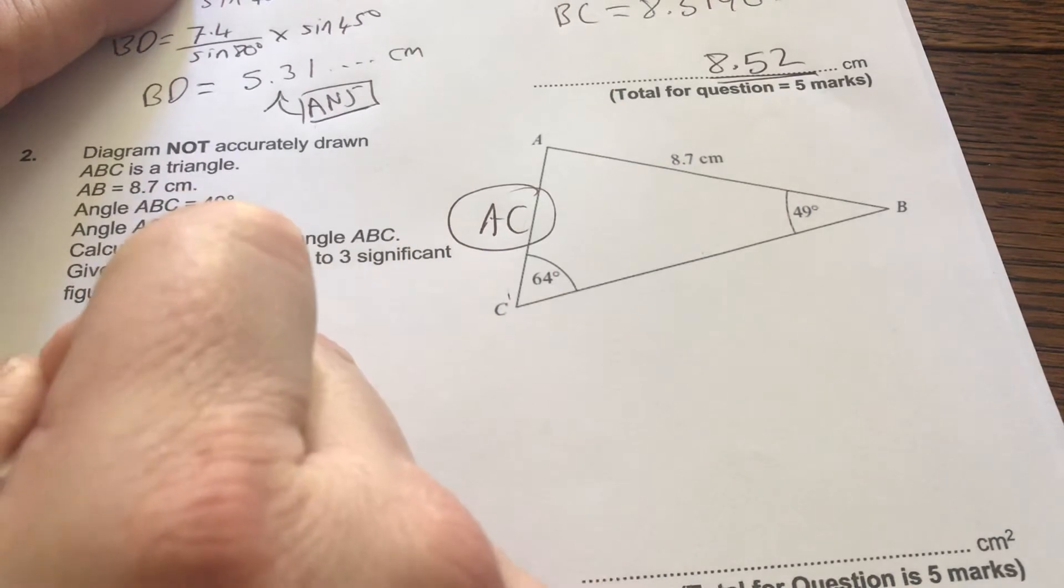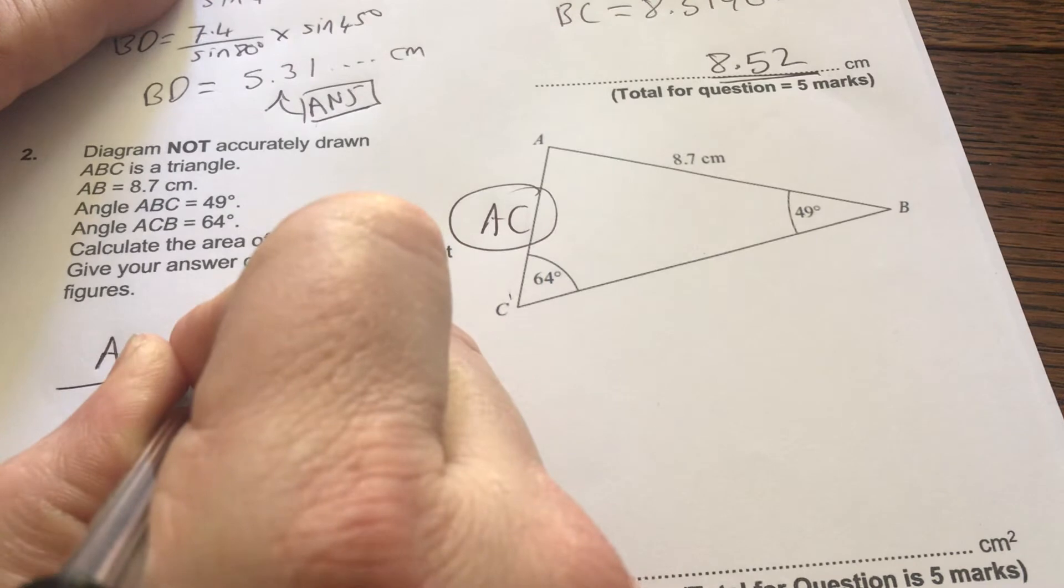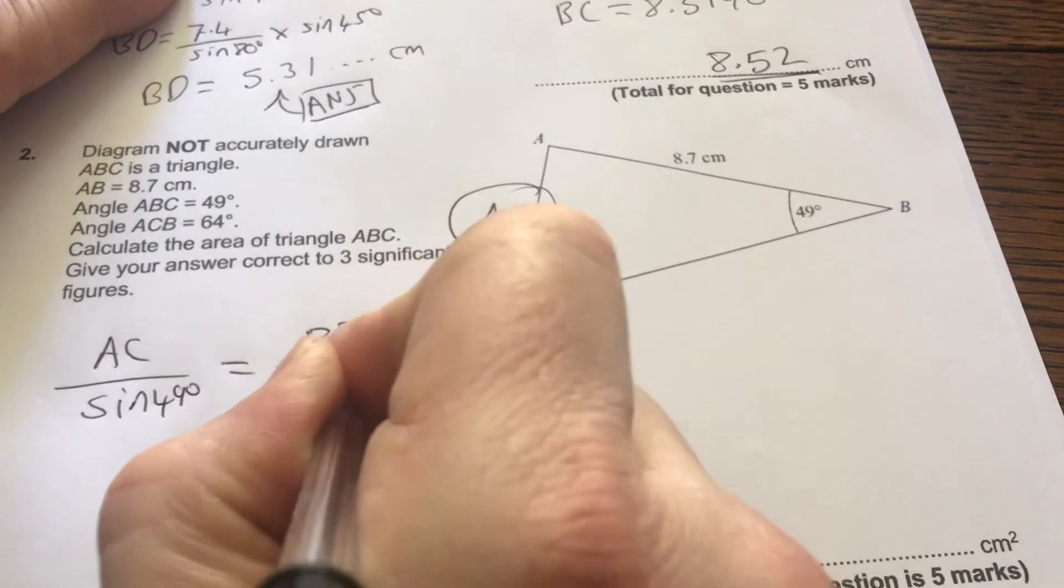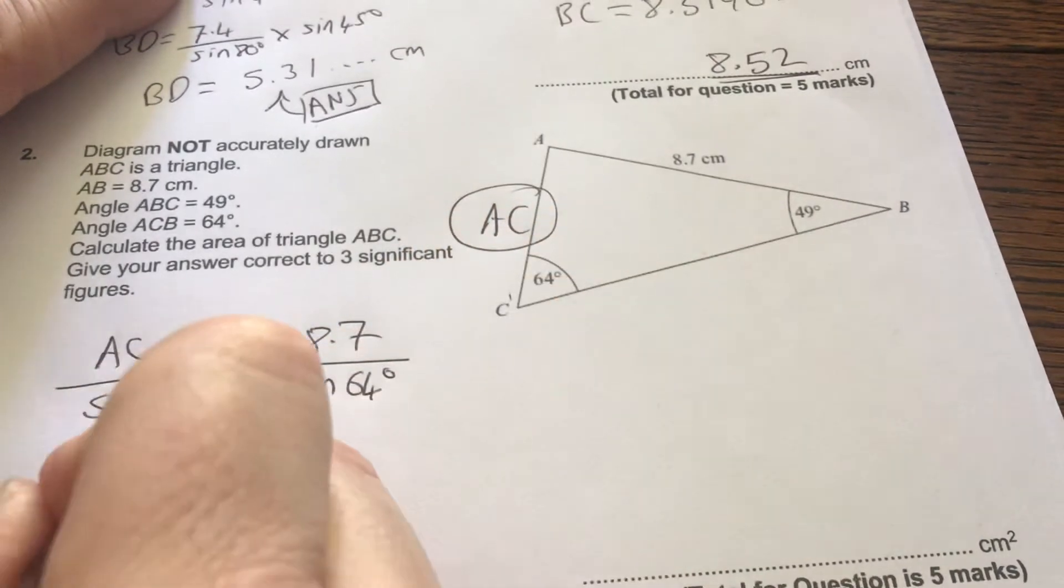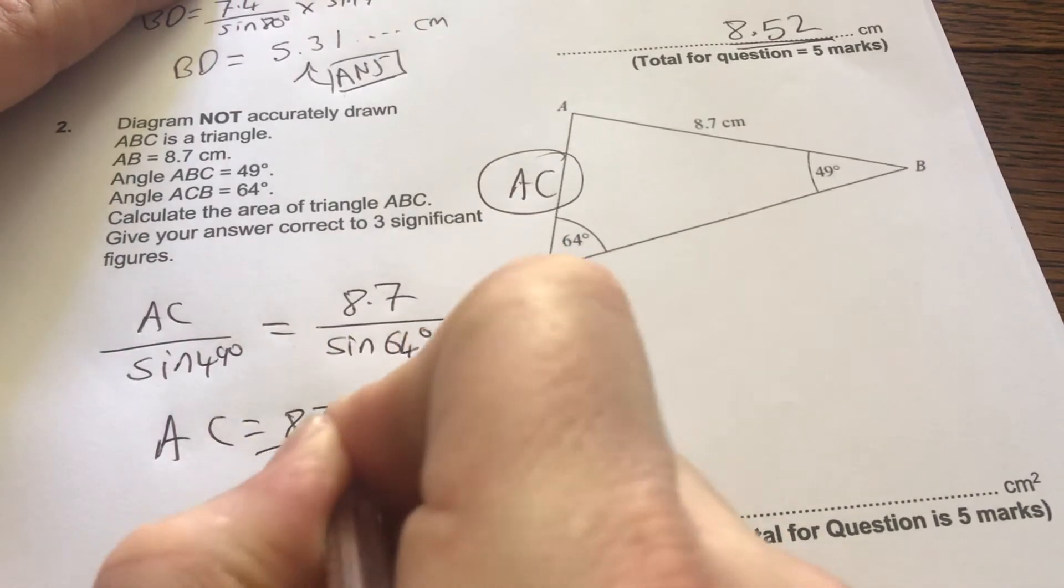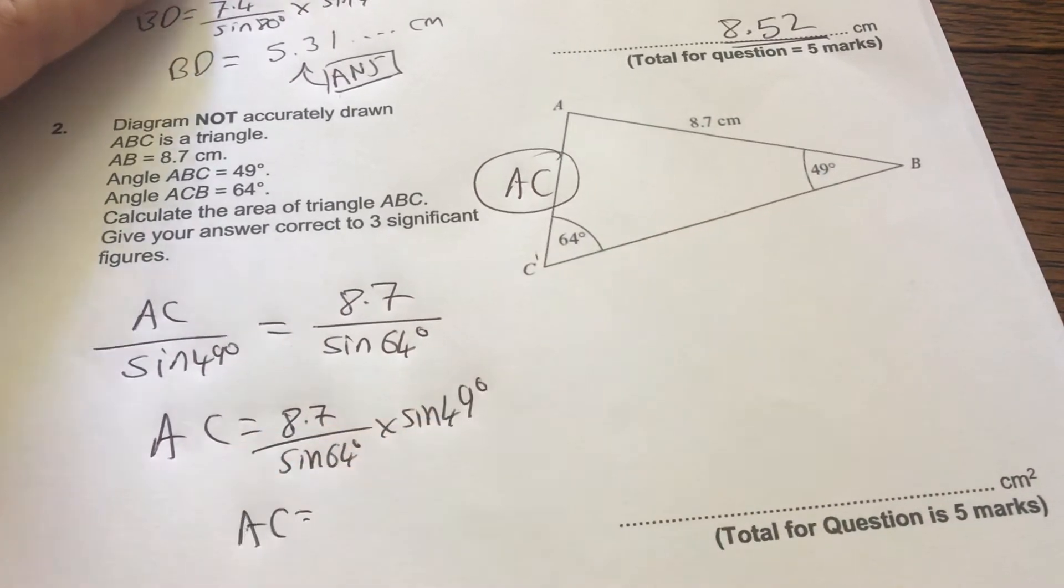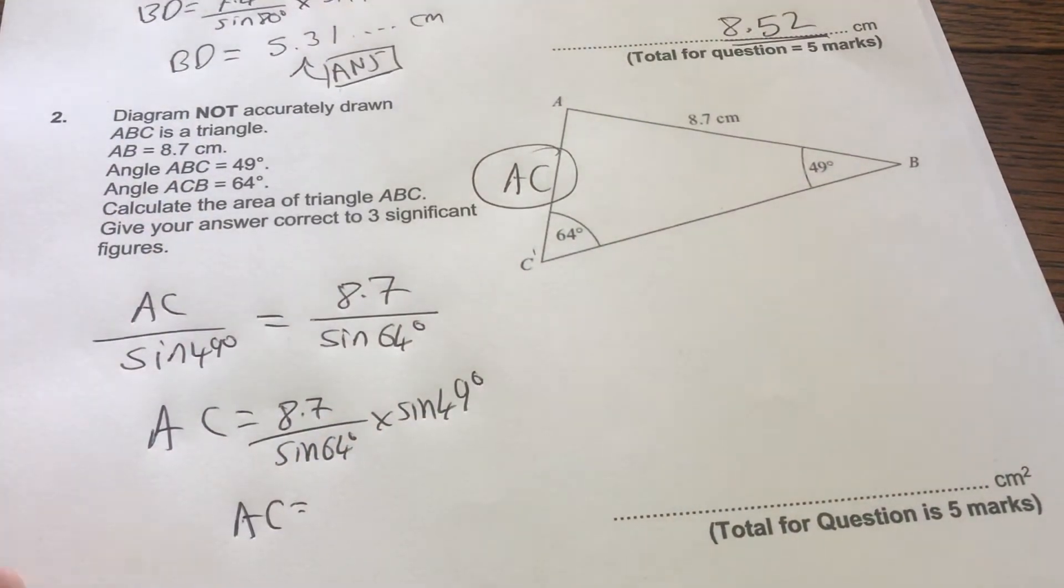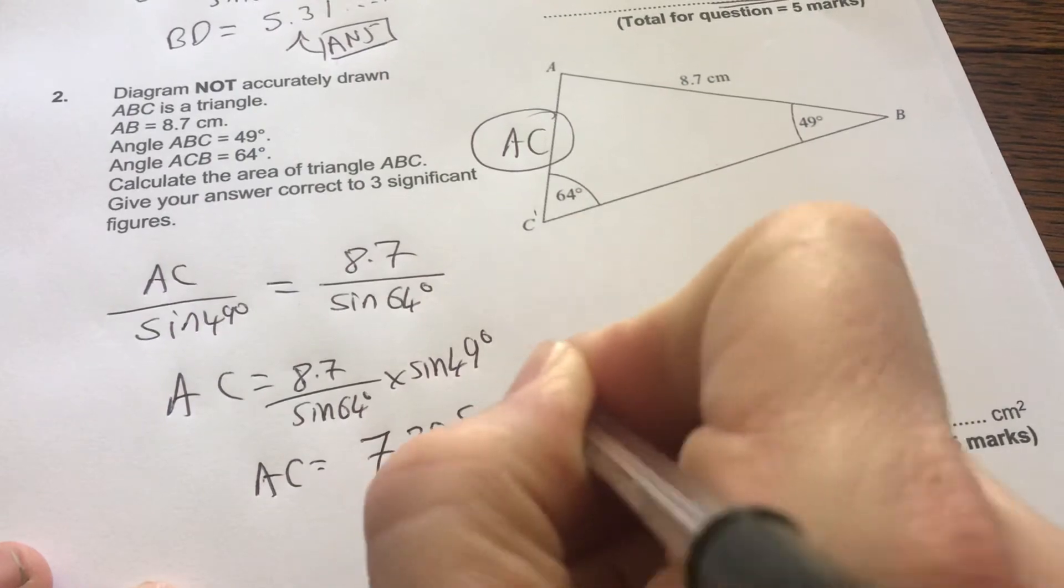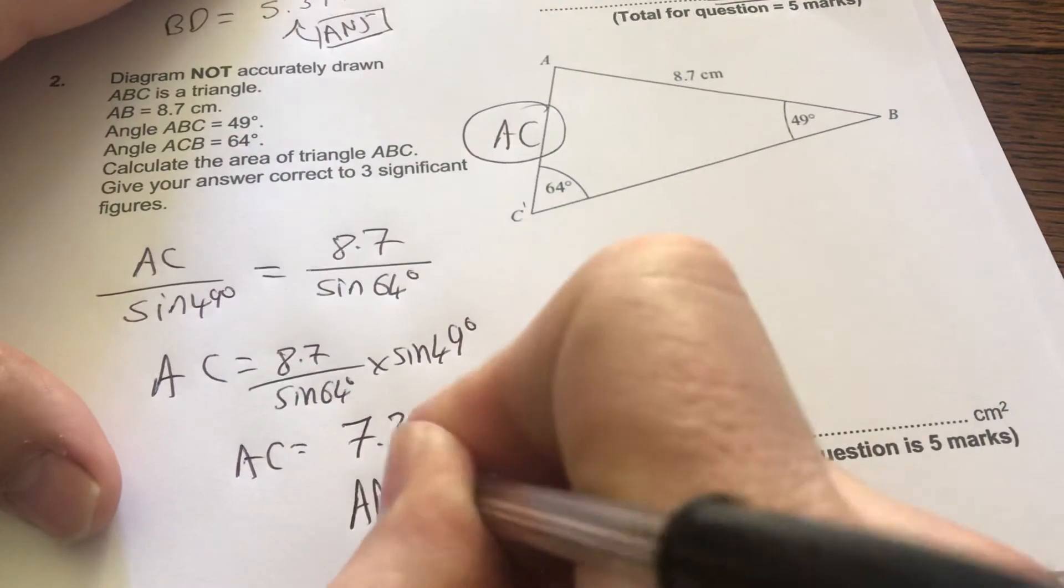So AC over sine 49 degrees equals 8.7 over sine 64 degrees. AC equals 8.7 over sine 64 degrees times sine 49 degrees. And you're going to get AC equals 7.305 and a bunch of other numbers, which I'm going to ask you to leave in your calculator and we'll call that ANS.